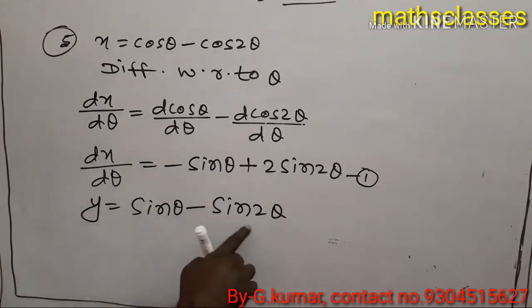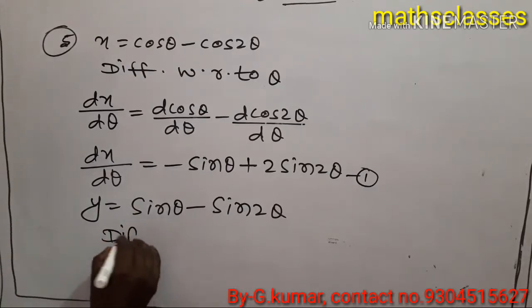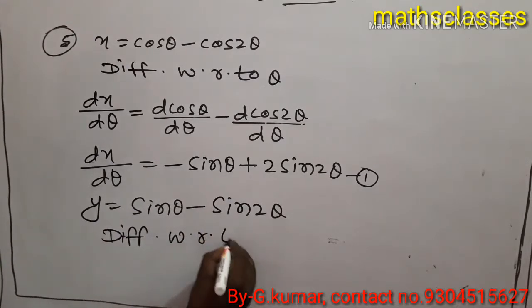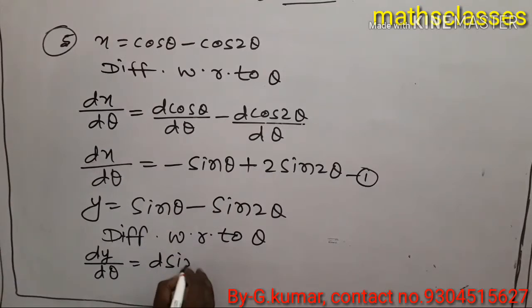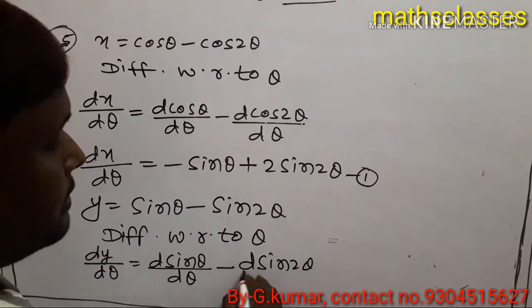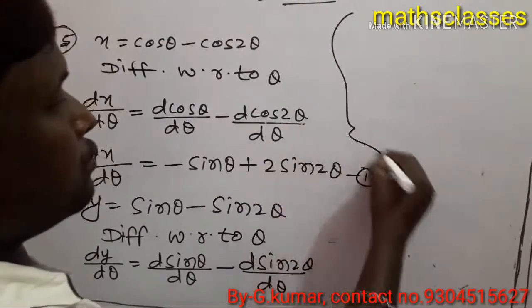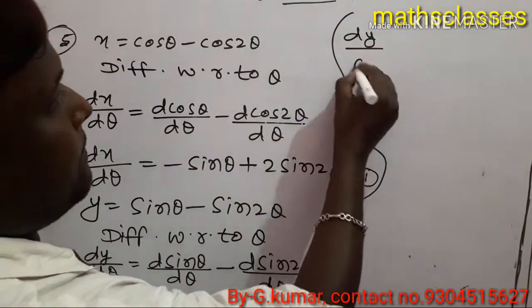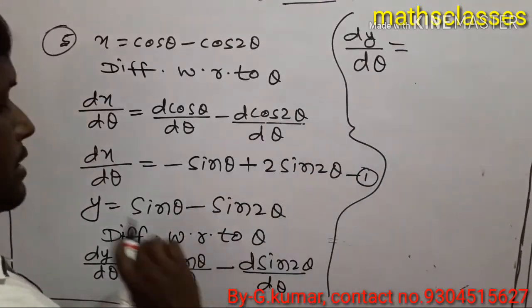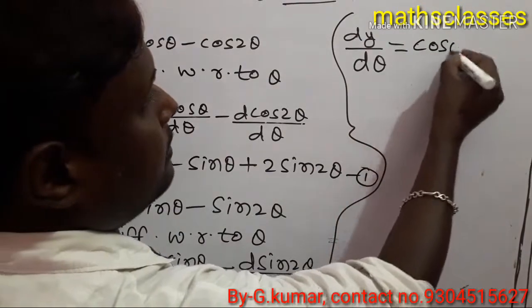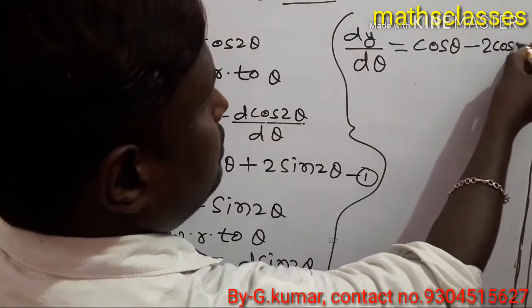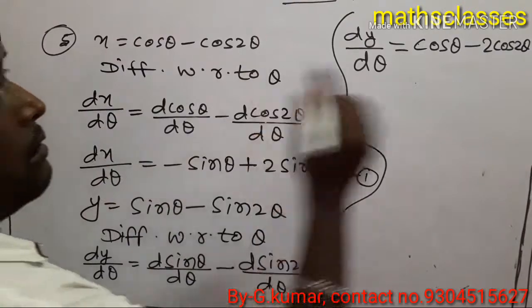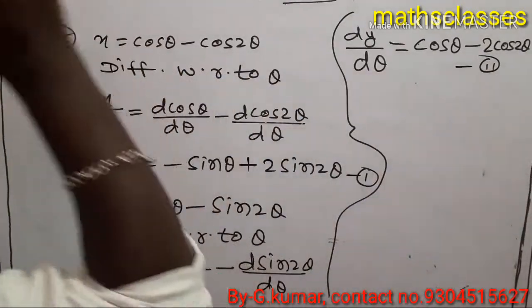The second part: y equal to sin theta minus sin 2 theta. This is also a function of theta, so we differentiate with respect to theta. dy by d theta equal to d(sin theta) upon d theta minus d(sin 2 theta) upon d theta, giving cos theta minus 2 cos 2 theta.